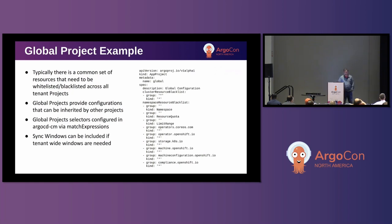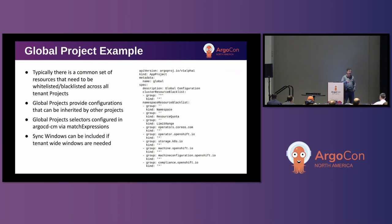Here's an example of a global app project. Across all tenant app projects there are commonalities — for example, blacklisting all cluster resources, or certain namespace-scoped resources like namespace, resource quota, limit range, and some OpenShift-specific items. Your use case will vary. The global project allows other app projects to inherit this configuration. Sync windows are also quite useful here — specify a sync window in the global project and if you're taking your cluster down, everyone gets it automatically. It's configured via standard Kubernetes match expressions.